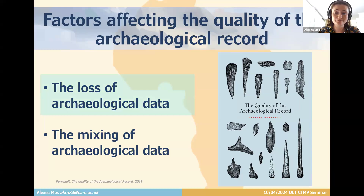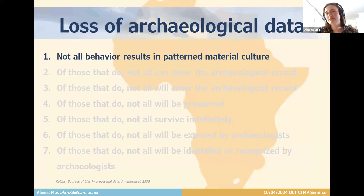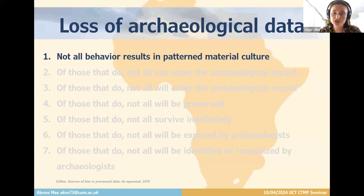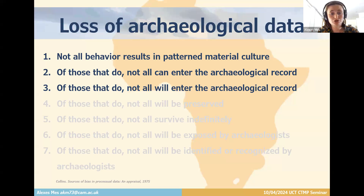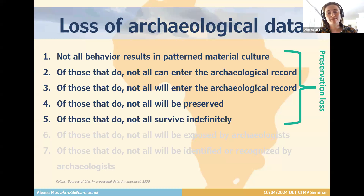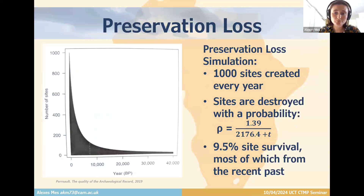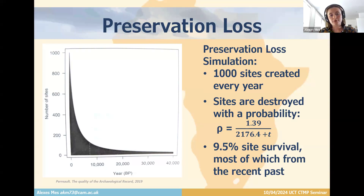Beginning with the loss of archaeological data: in 1975, Michael Collins identified a series of sampling biases in a hierarchical structure. Number one: not all behavior results in patterned material culture. Of those that do, not all can enter the archaeological record. Of those that do, not all will be preserved. Of those that do, not all will survive indefinitely. These five biases all tend to lead to preservation loss. We can perform a quick preservation loss simulation: taphonomic loss leads to frequency distributions of archaeological sites that decrease through time. If we create a simulation where 100 sites were created every year and destroyed with a given probability, the rate of taphonomic loss varies with site age.